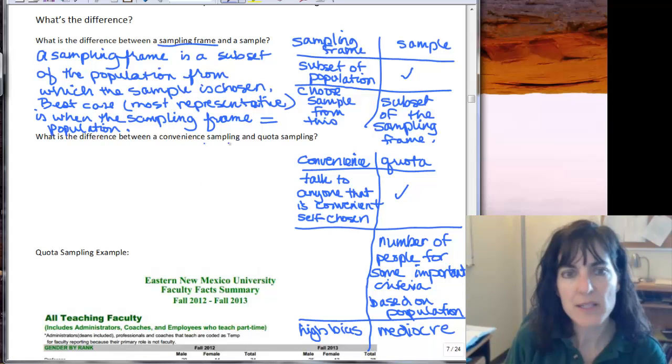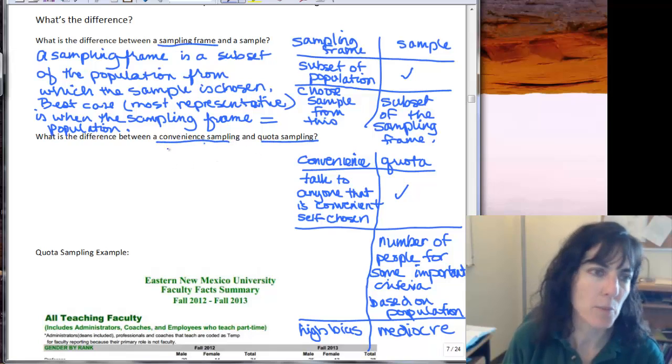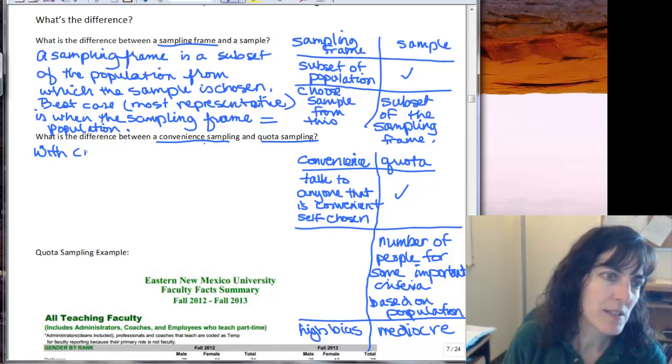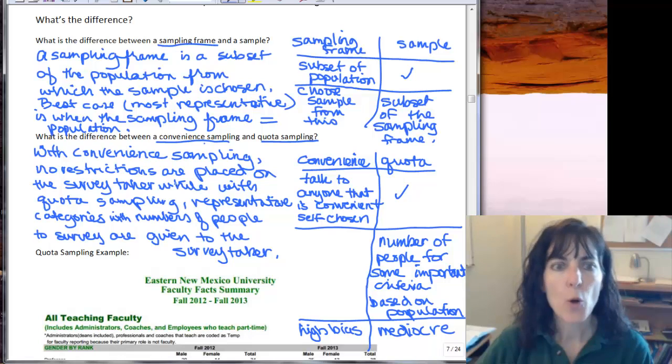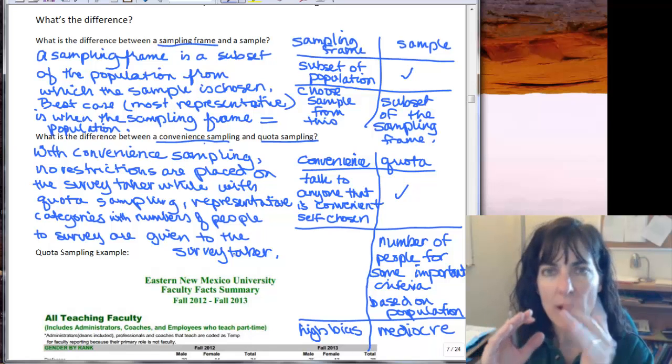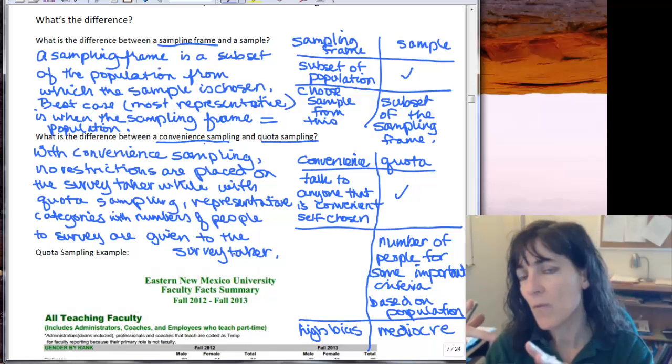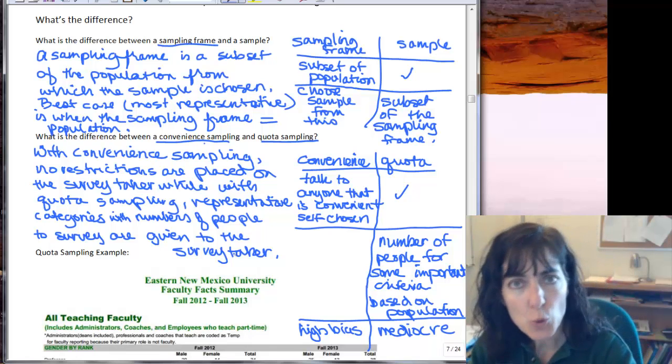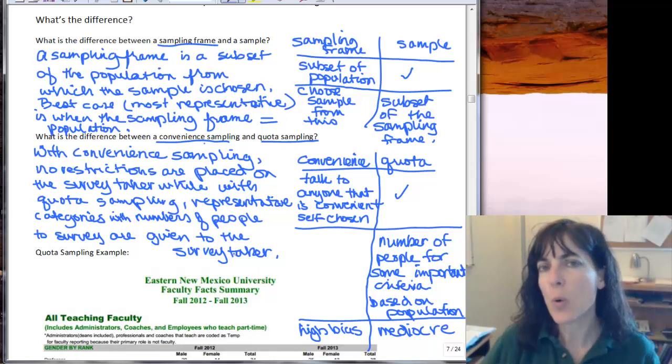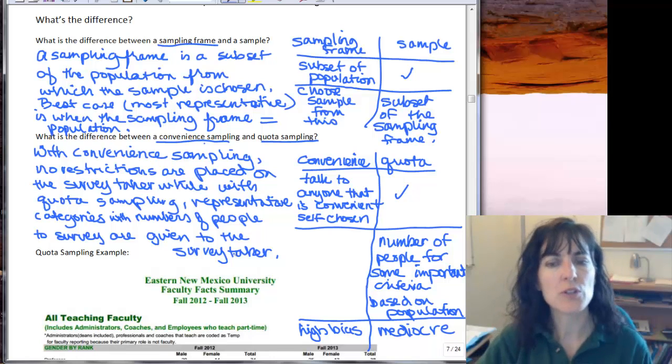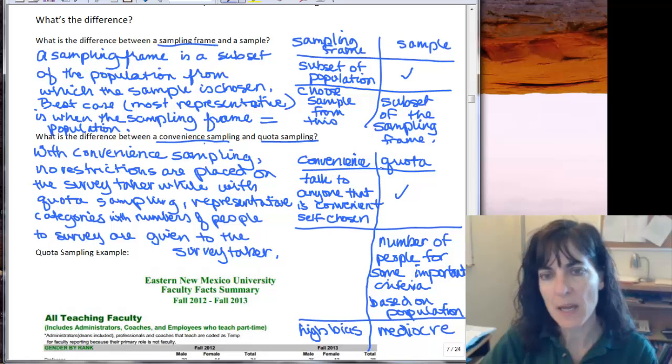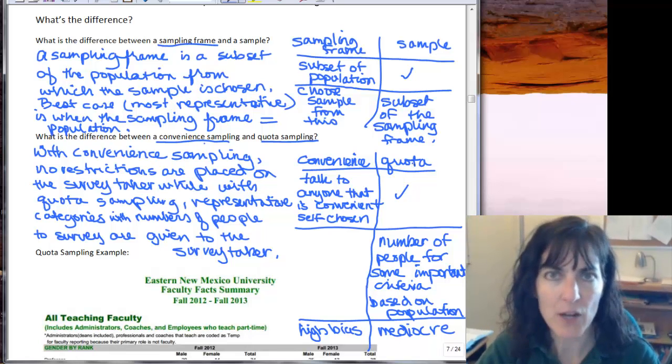So then the big difference between a convenience sample, between convenient sampling and quota sampling: with convenient sampling, no restrictions are placed on the survey taker, while with quota sampling, representative categories with numbers of people to survey are given to the survey taker. And so that's the only structure that the survey taker is given, is you have to talk to 50 Democrats and 70 Republicans, or you have to talk to 20 children and 40 adults and 20 older people. So that's the only kind of restrictions. But you can still go to the convenience store and do your sample there. So really, the bias for the convenient sample is pretty high, and for a quota sample is just barely better, but it is better.